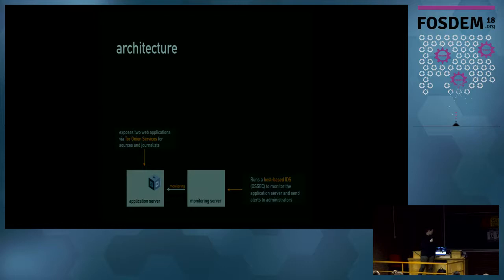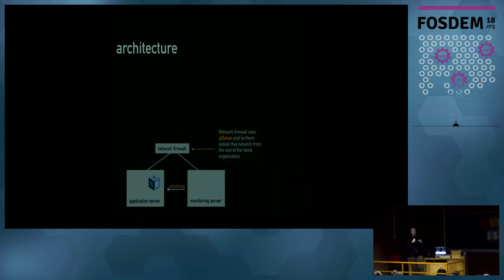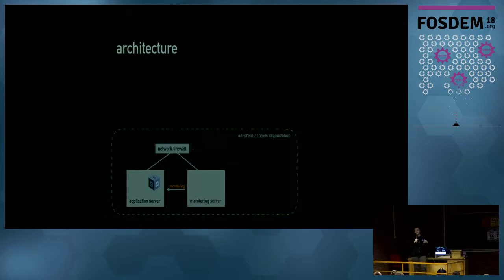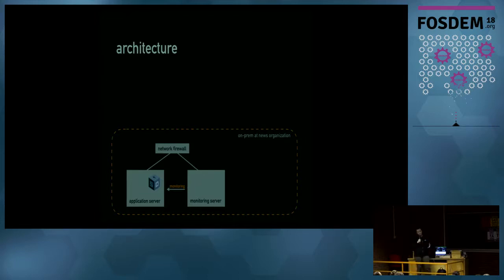Administrators are people at the news organization charged with being stewards of their SecureDrop — not us at Freedom of the Press Foundation, because that would be another third party. The two servers connect to a network firewall, trying to segment the SecureDrop network as much as possible from the rest of the news organization's network. All of this is on-premise at the news org — either in their data center, a secure room, or sometimes the general counsel's office. So if they are subpoenaed, they will know about it and can fight it.